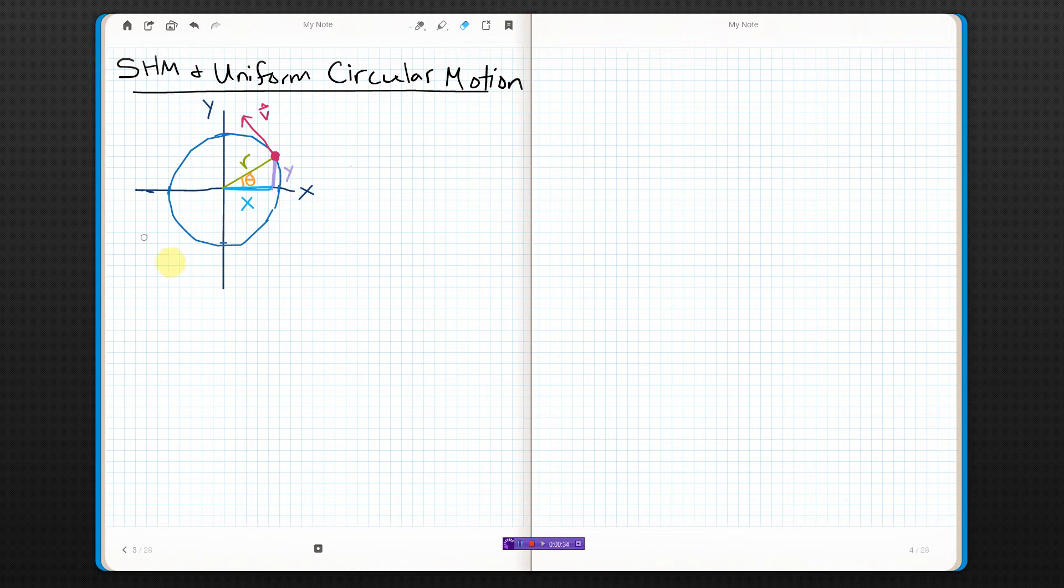I'm also going to assume that that velocity is the same all the way around. Which means, and I'm going to write this over here, that the angular velocity, since it's a constant, I can just put as theta over T.